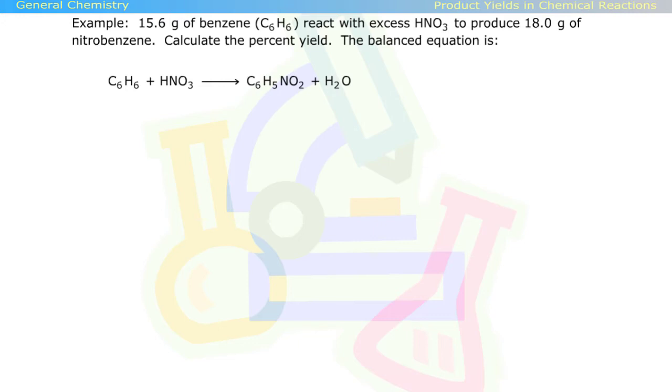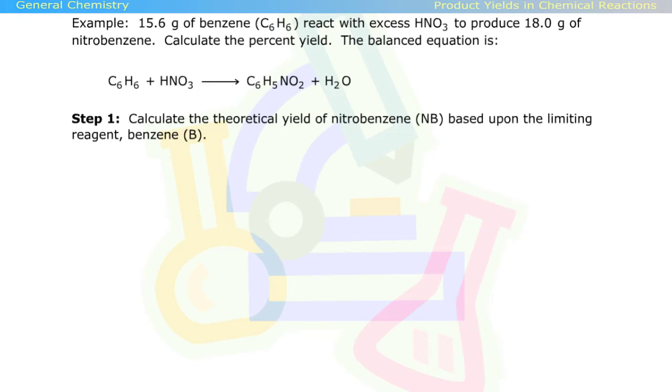The balanced equation is shown below. Step one: Calculate the theoretical yield of nitrobenzene based upon the limiting reagent, benzene.